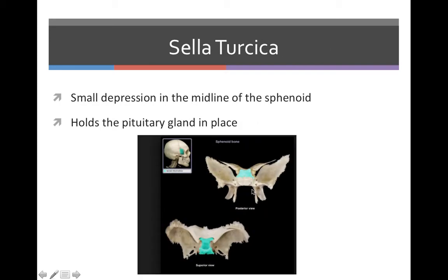The sella turcica is a small depression on the midline area of the sphenoid that holds the pituitary gland in place. It is shown in green.